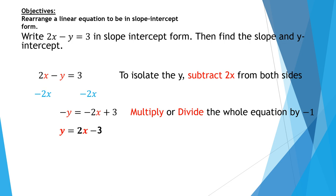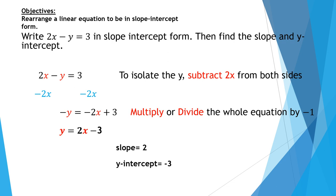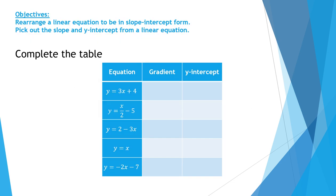Since the equation is now in slope intercept form, I can pick out the slope and the y-intercept. The slope is 2. The y-intercept is negative 3.